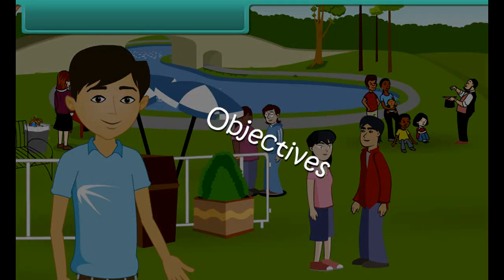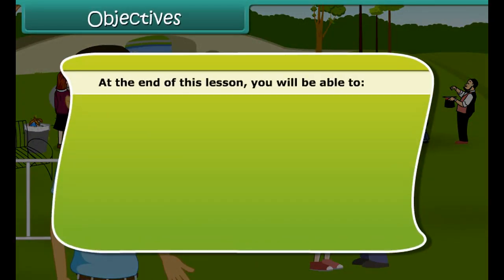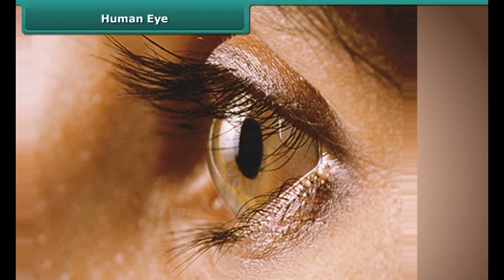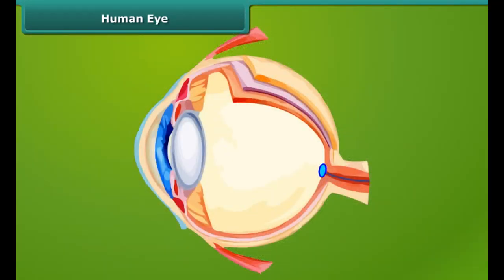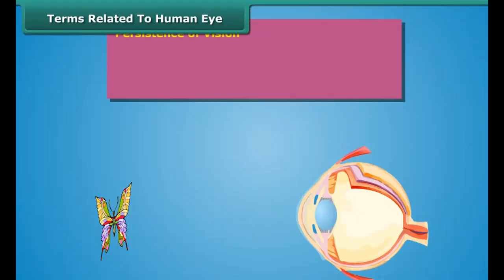At the end of this lesson you will be able to explain the parts of the human eye. The eye is nearly spherical in shape with a diameter of about 2.3 cm. To know more, click on the labels.